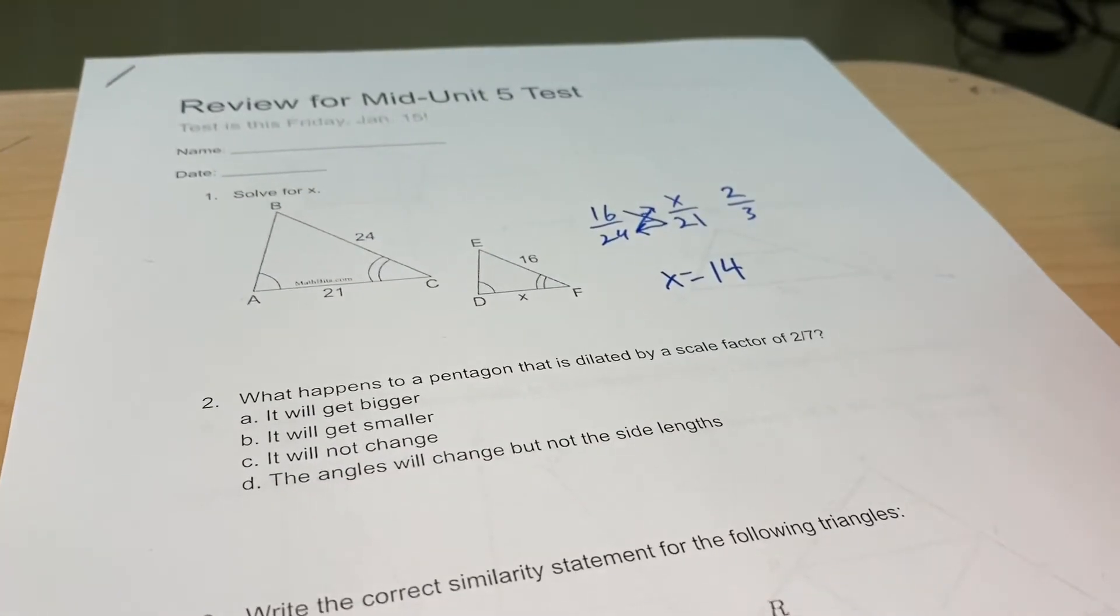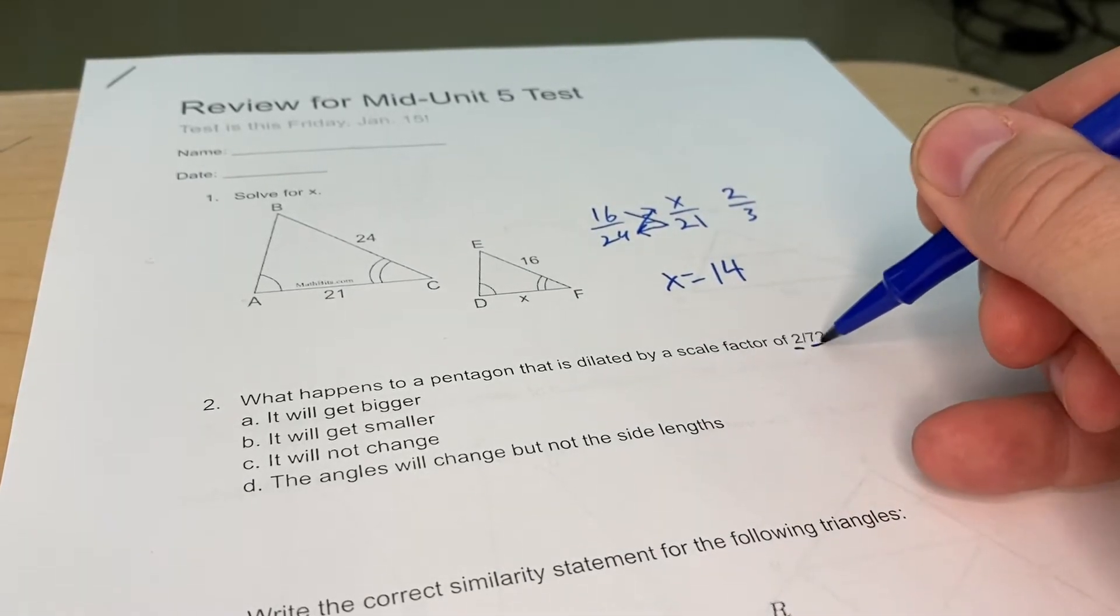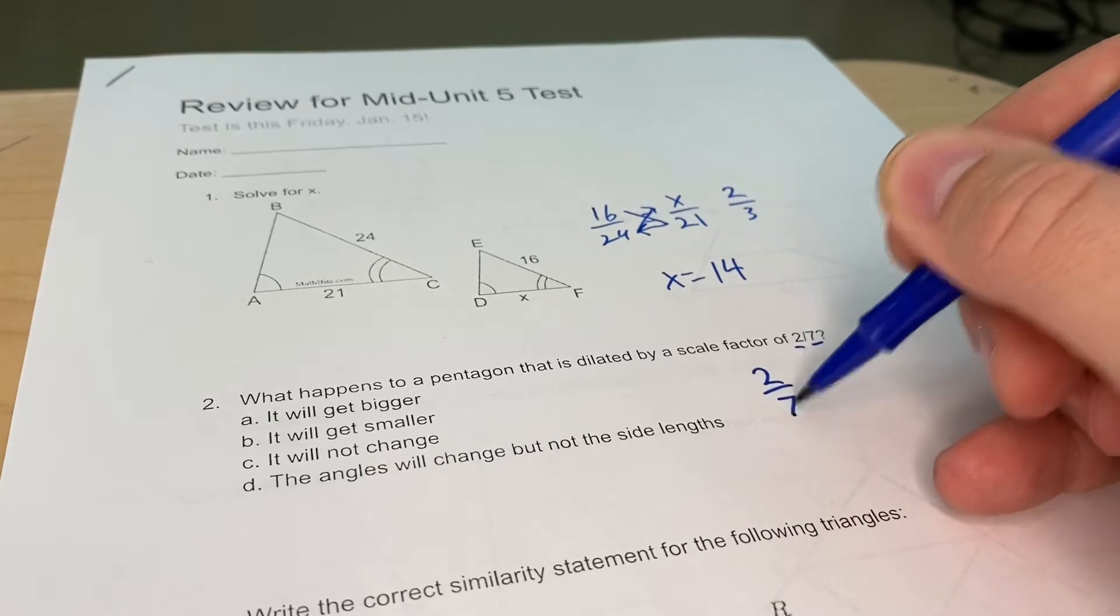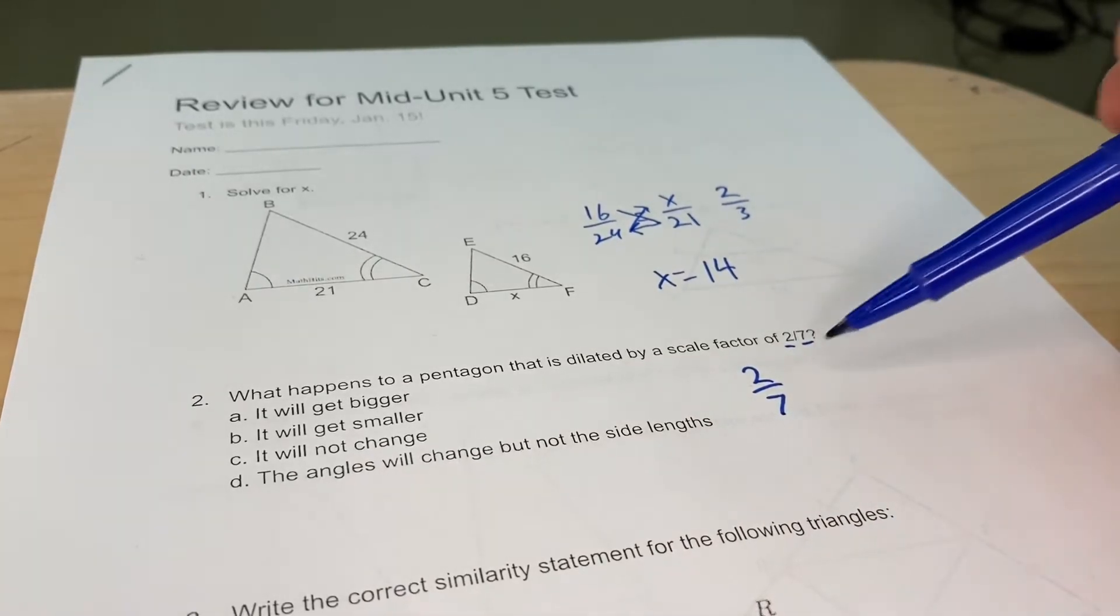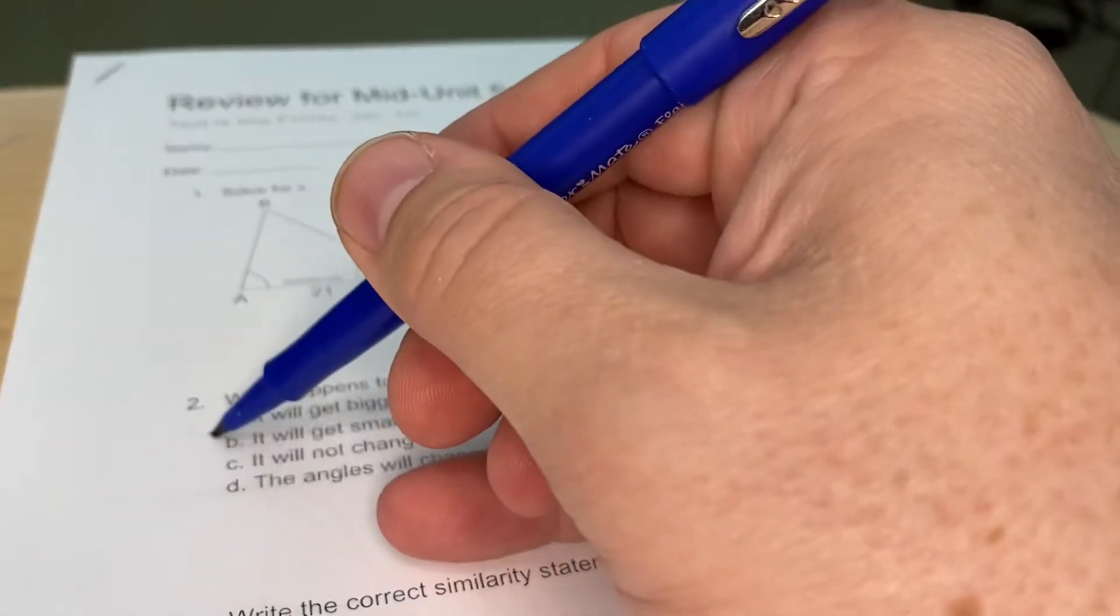On number two, what happens to a pentagon that is dilated by a scale factor of 2/7? This is smaller than one, so it's going to get smaller.